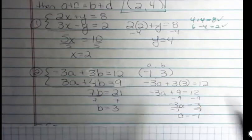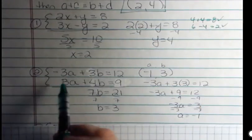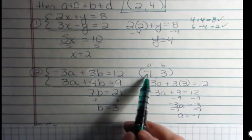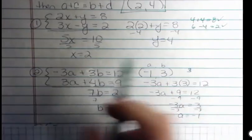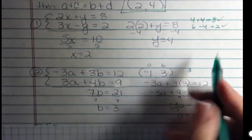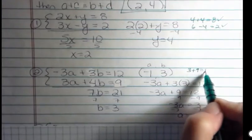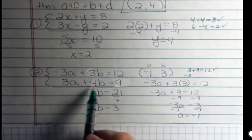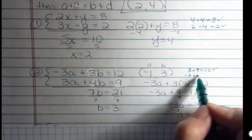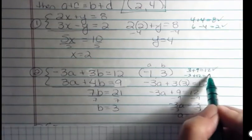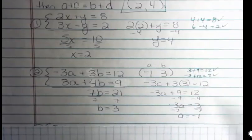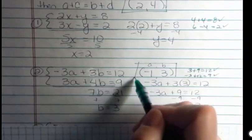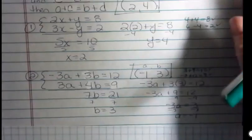So I have negative 1, 3. I can do a quick check here. Negative 3 times negative 1 is 3. 3 times 3 is 9, and that equals 12. Yep. Here, 3 times negative 1 would be negative 3, and 4 times 3 would be 12, and negative 3 and 12 equals 9. So yep. So here's my solution, negative 1, 3, the answer to my system.